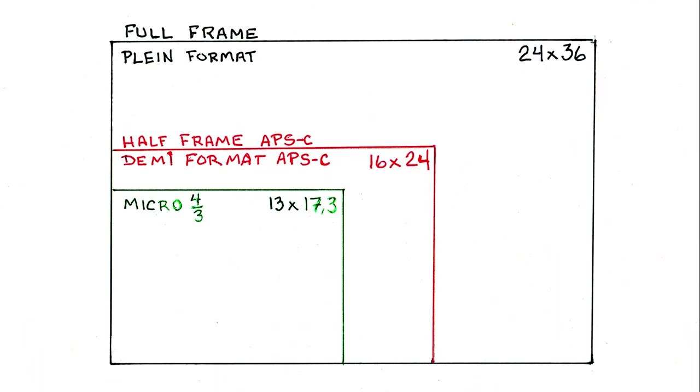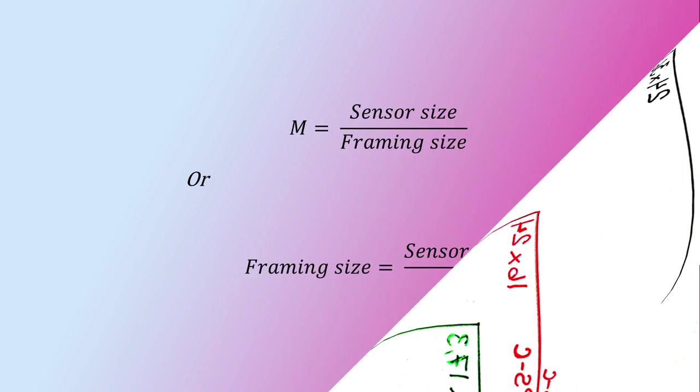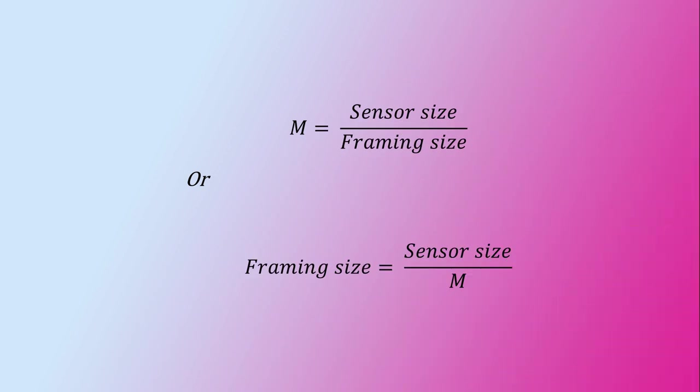Although there are several sensor sizes, I will mainly discuss the full frame size which is 24 by 36 mm. But the same logic applies to both the 16 by 24 APS-C format and the 13 by 17.3 mm micro 4-thirds format. The magnification formula is M equals sensor size divided by framing size.